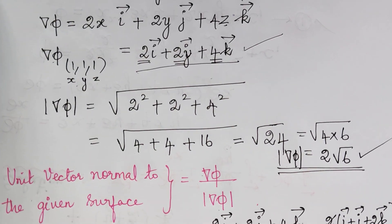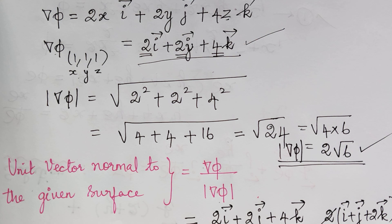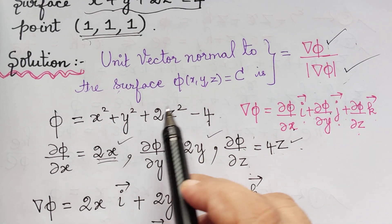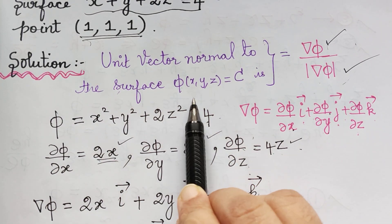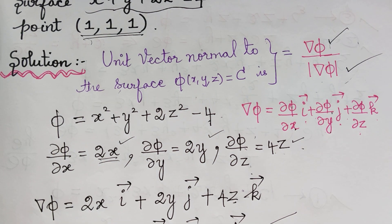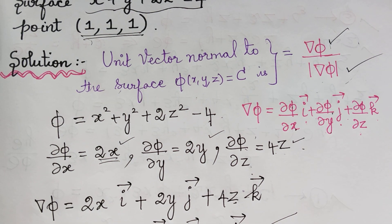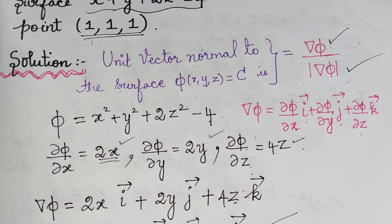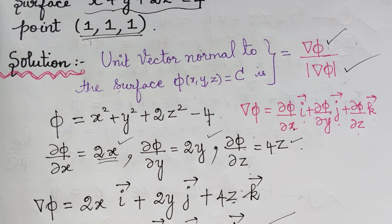I hope you understood how to find the unit vector normal to a given surface φ. In our next video, we will learn how to find the angle between two given surfaces at a particular point. Kindly follow the next video lecture. Thank you.